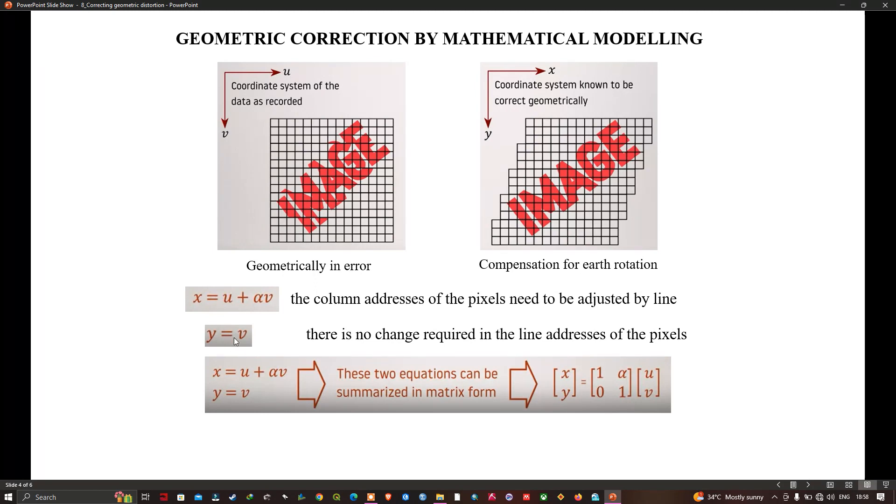To compensate for the earth's rotation, the coordinates across the scan line has to be adjusted progressively to the west as we increment down the lines of the image. In other words, as well as being a function of u, x must also be a function of v, representing this shift. The coefficient alpha describes the degree of correction to the west as the platform moves southwards.